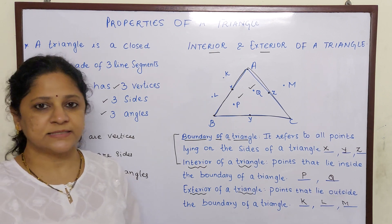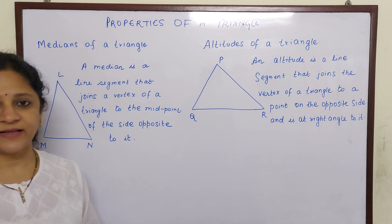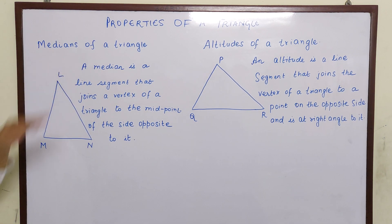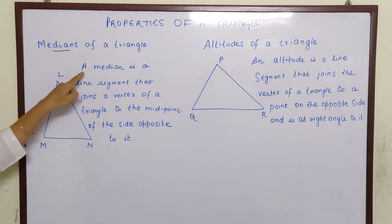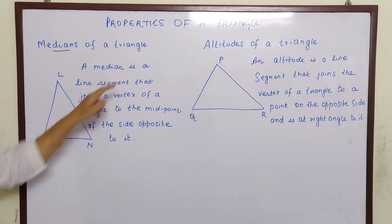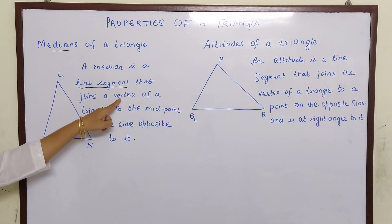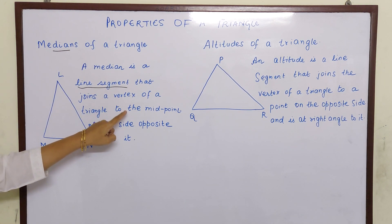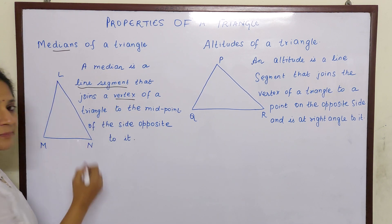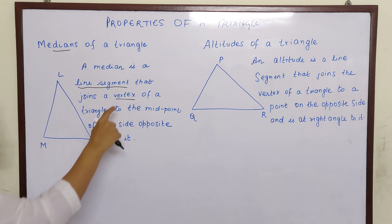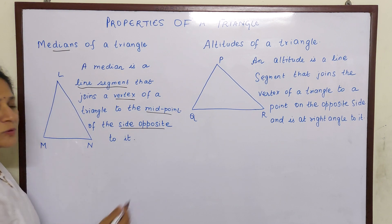Now we will learn what are medians and altitudes. Our next topic is medians of a triangle. A median is a line segment that joins a vertex of a triangle to the midpoint of the side opposite to it. That means it is a line which joins the vertex and the midpoint of the side opposite to it.